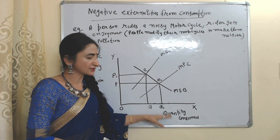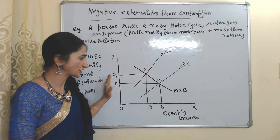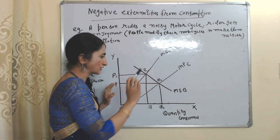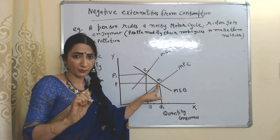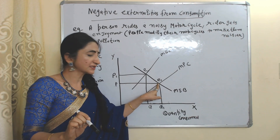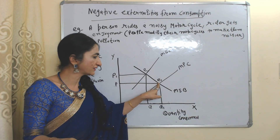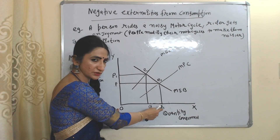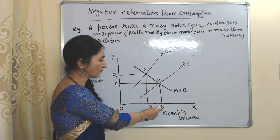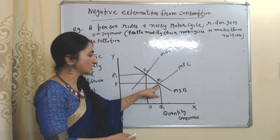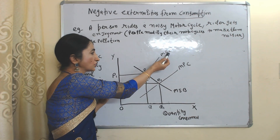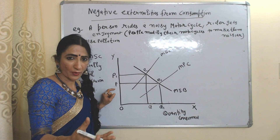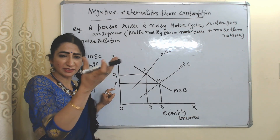In this diagram, on the x-axis we have quantity consumed, on the y-axis we have price, benefit, and cost. We have marginal social benefit, marginal private cost, and marginal social cost. E is our initial equilibrium point without any government intervention. But this is not the socially optimum equilibrium point — at this equilibrium point people are consuming OQ1, and this amount of consumption is causing so much environmental pollution.